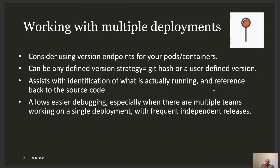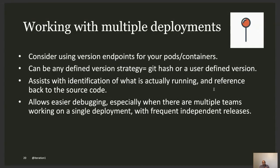When working with multiple deployments, it's better to have a version endpoint for your pods or containers so you know what you're actually running. A strategy I've followed for the past five years is tying whatever's running in production back to your source control — for example, including a GitHub commit hash in your version endpoint. That way you can confirm exactly which version of your code is running in production, because with frequent deploys you can easily lose track.